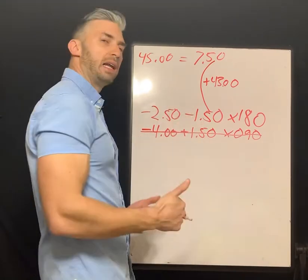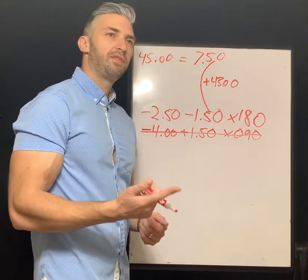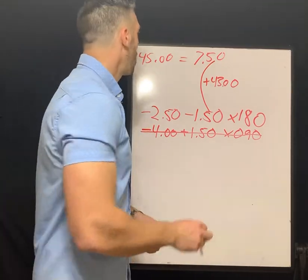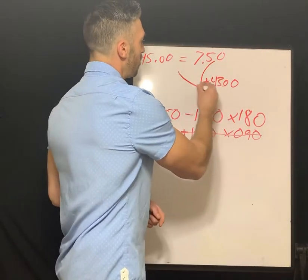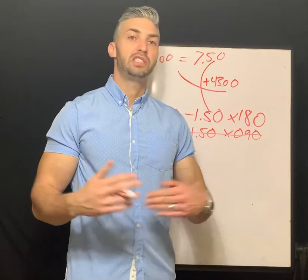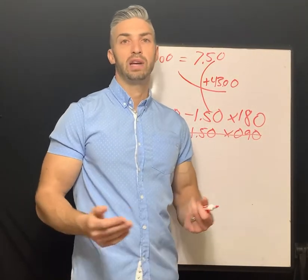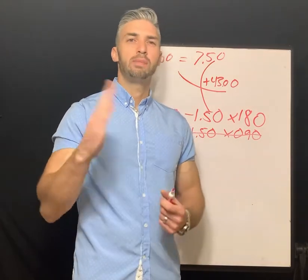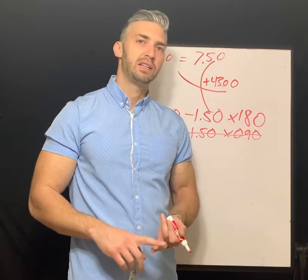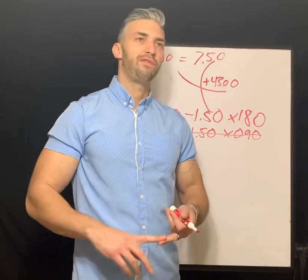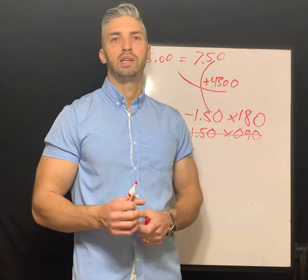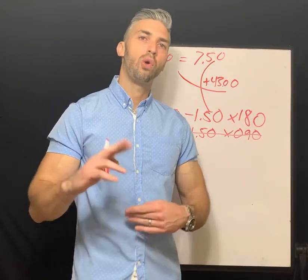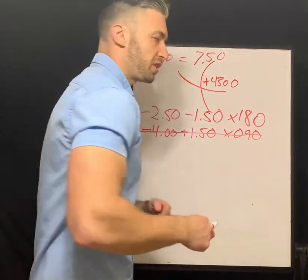After confirming minus cylinder form and compensating for vertex distance, we evaluate the K readings, which describe the corneal curvature. If the cornea is completely spherical you'll see the same K reading at all meridians. If there's corneal astigmatism present there'll be a variance between the steepest and flattest meridian — for example, 42 by 44 at 90 means there's two diopters of corneal astigmatism.